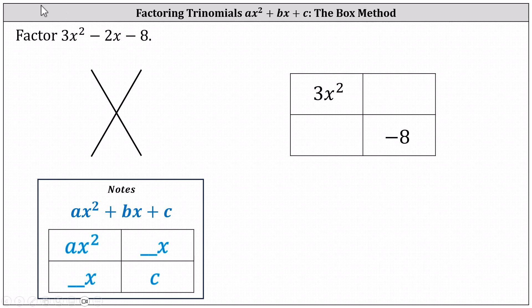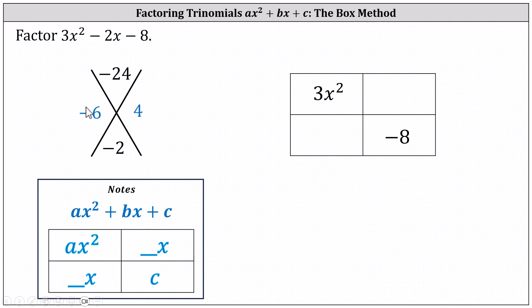For the next step, we determine the factors of a times c that add to b. Notice a times c is 3 times negative 8, which is negative 24, and b is negative 2. We now need to determine the factors of negative 24 that add to negative 2. Negative 6 times positive 4 is negative 24, and negative 6 plus 4 is negative 2. We found the desired factors.